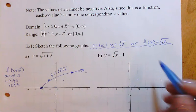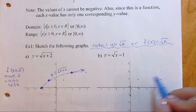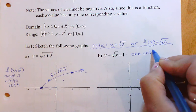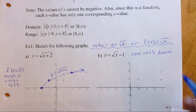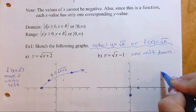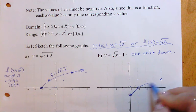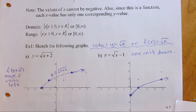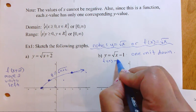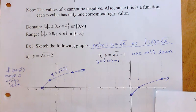For the next example, this is where the parent function would have been, and this transformation moves everything one unit down. Each of the points moves one unit down from the parent, giving the new graph. You could also express this in function notation as f of x minus one.